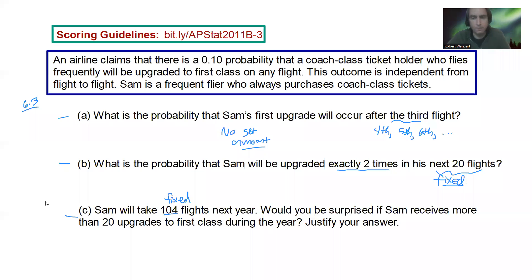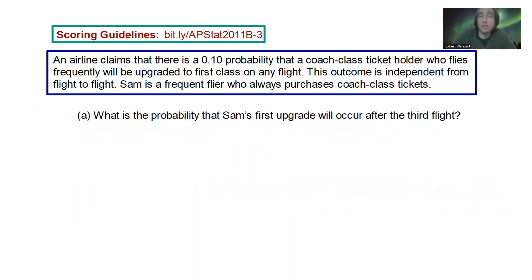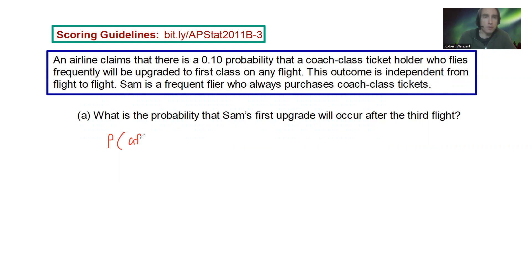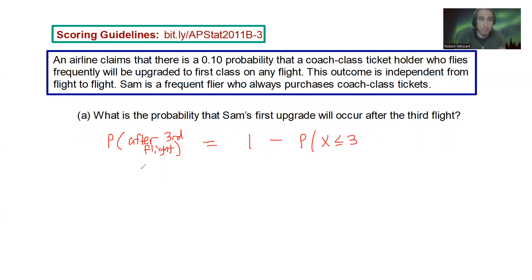Let's look at Part A. The question is: what's the probability that Sam's first upgrade will occur after the third flight? Since there is no limit to the flights in this problem, we don't want to calculate the fourth, fifth, sixth, seventh, eighth, and so on individually. Instead, we want to think about this as the complement: that's going to equal 1 minus the probability that X is less than or equal to 3. And if you haven't guessed already, this is a geometric probability distribution.